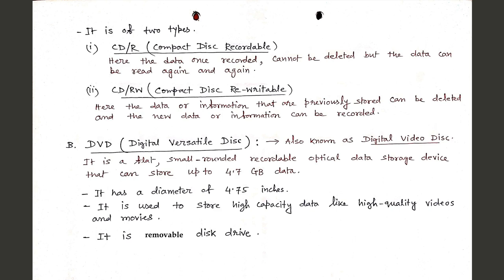DVD stands for Digital Versatile Disk, also known as Digital Video Disk. It is a flat, small, rounded recordable optical data storage device that can store up to 4.7 GB of data. It has a diameter of 4.75 inches. It is used to store high-capacity data like high-quality videos and movies. It is a removable disk drive.